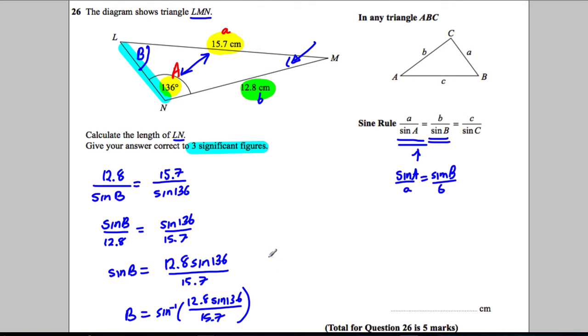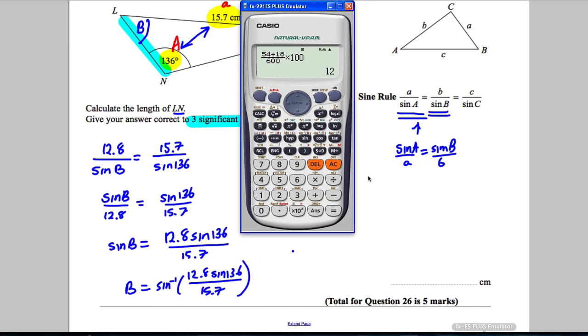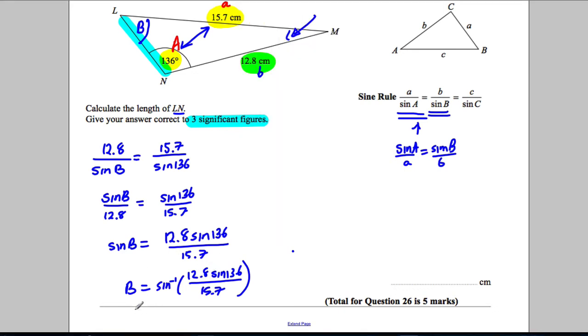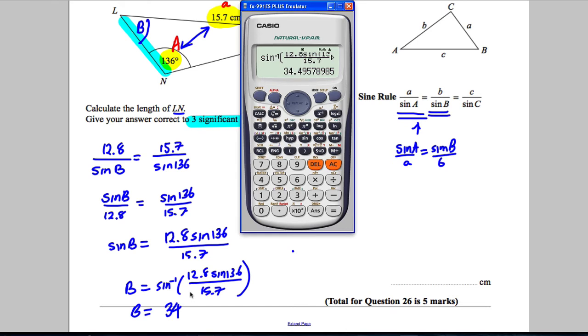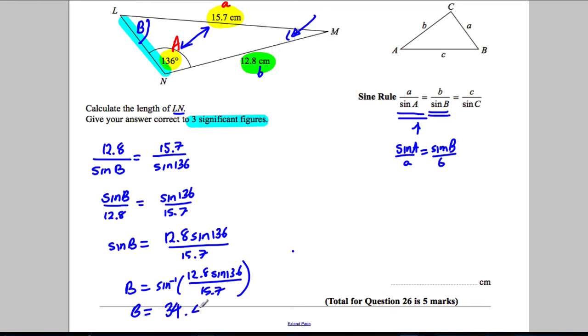So I'm gonna firstly work out this B here I never worked out yet, so let's go back to that and say the inverse sine of fraction, let's call it 12.8 sine 136 all over 15.7, and come out of that and close the bracket and we're getting 34.49 degrees. So B is equal to 34.4957 degrees. Now it's important to go further than three significant figures to keep the accuracy, so that's angle B.